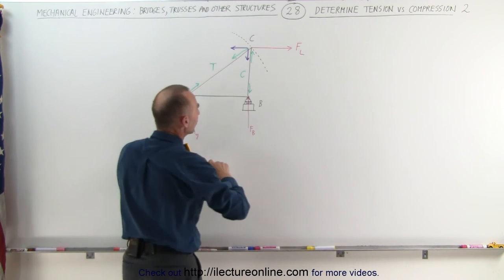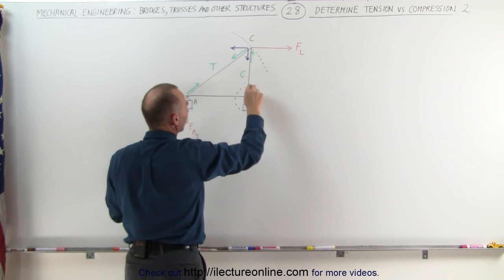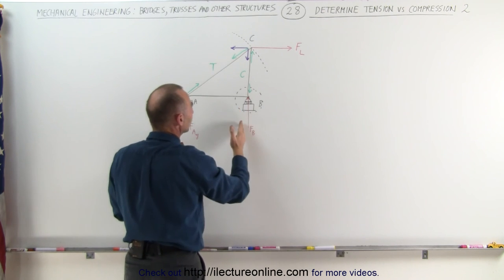If we now look at this joint right here, notice there's three, well, there's actually only two members, and there's a load force, or there's a force pushing back at B in this direction.